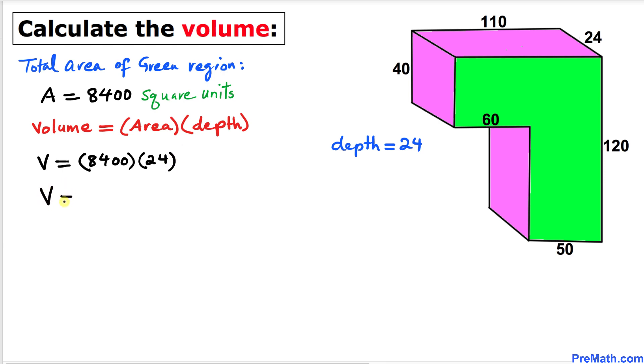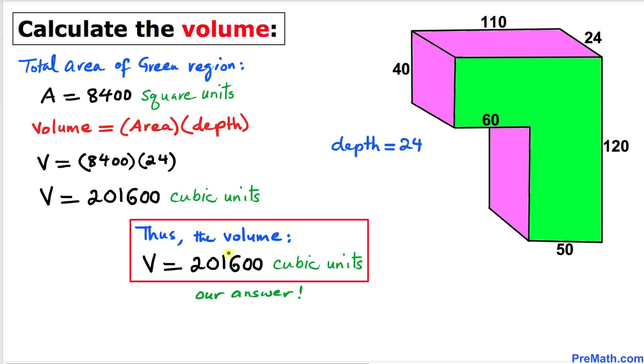Thus, the volume turns out to be, if we multiply these numbers, 201,600 cubic units. So the volume of this given shape turns out to be 201,600 cubic units, and that's our final answer.